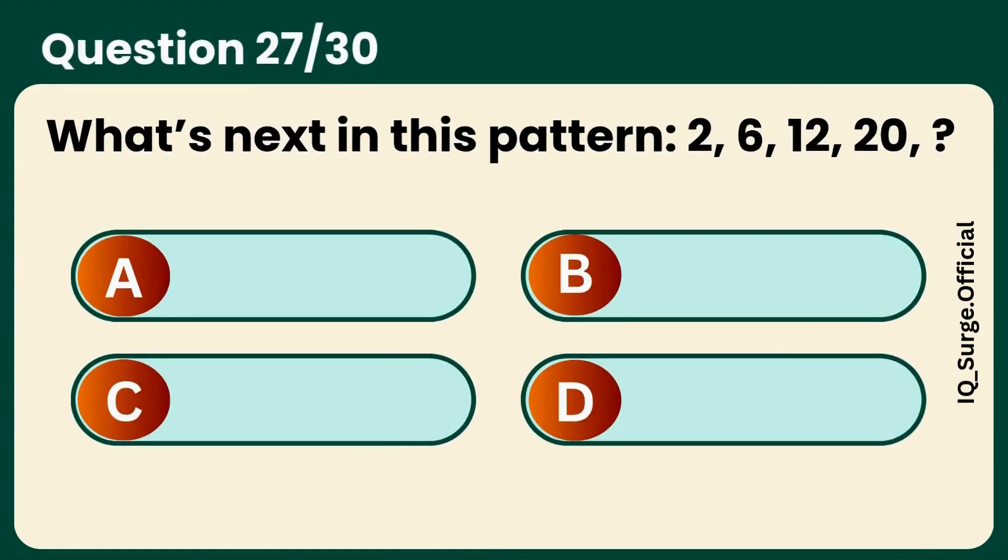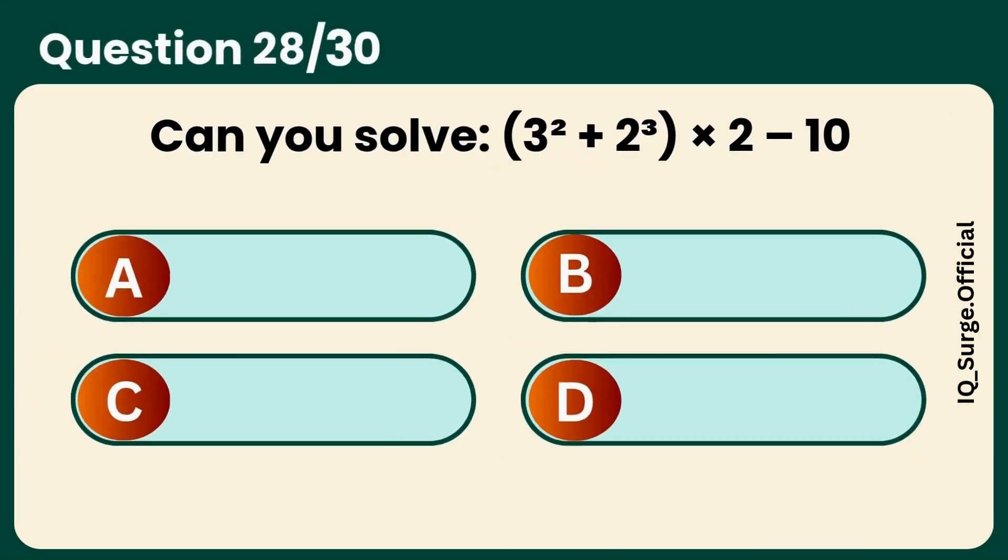What's next in this pattern? 2, 6, 12, 20. Answer A, 30. Can you solve 3 squared plus 2 cubed times 2 minus 10? Answer C, 24.